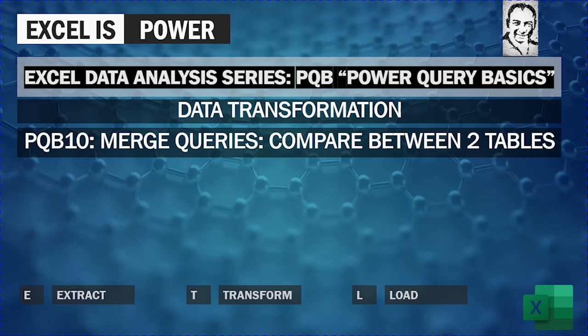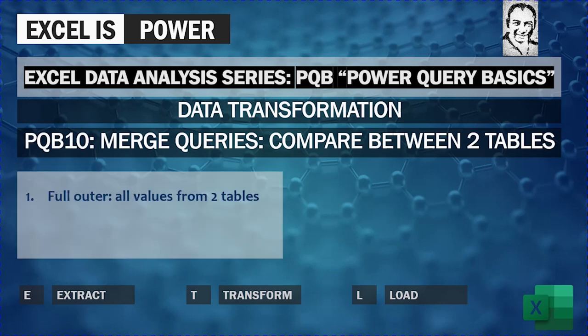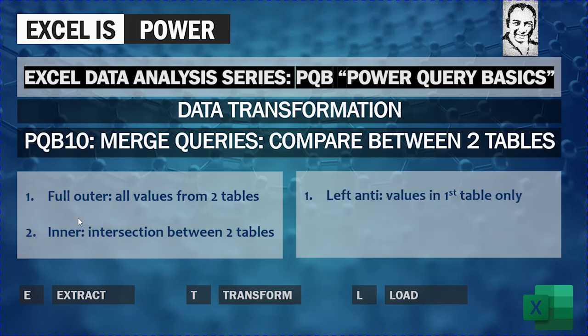We are going to use different join types. The first join type is full outer, which will help us to bring all the values from two tables. Then we'll look at the inner join type, which will help us to bring the intersection between two tables. We're also going to look at left anti, when we want to get the values in the first table only, and finally the right anti, which we use when we want to bring the data from the second table only.